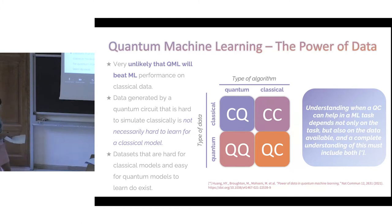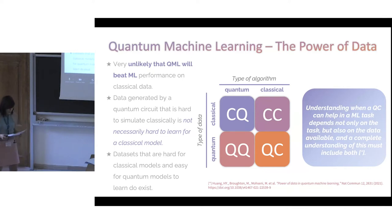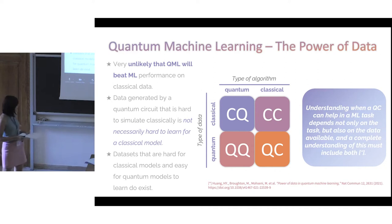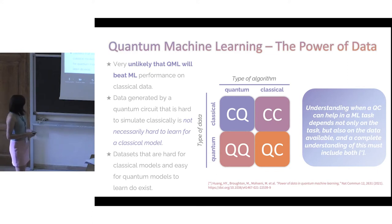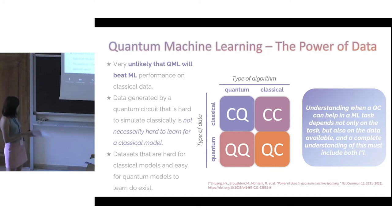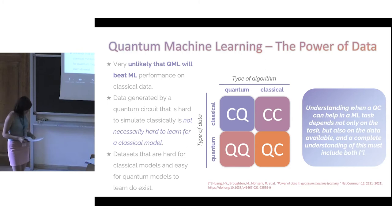The last conclusion is that datasets that are ultimately quantum in nature — easy for quantum models to learn but hard for classical models — do exist. We haven't found them yet, but they must exist. This is regardless of the architecture or training algorithms you can think of. If you want the rigorous mathematical background and proofs behind these statements, you can read this manuscript or the reference shown here.